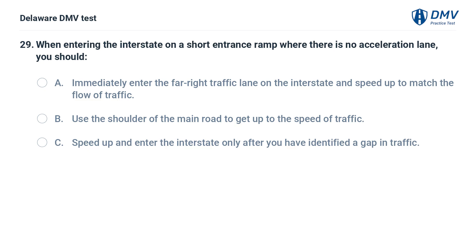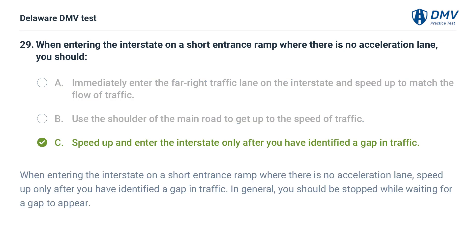When entering the interstate on a short entrance ramp where there is no acceleration lane, you should: A. Immediately enter the far right traffic lane on the interstate and speed up to match the flow of traffic. B. Use the shoulder of the main road to get up to the speed of traffic. C. Speed up and enter the interstate only after you have identified a gap in traffic. Answer: C. Speed up only after you have identified a gap in traffic. In general, you should be stopped while waiting for a gap to appear.